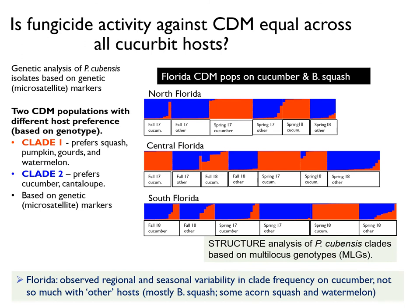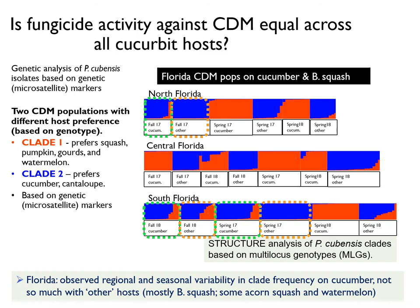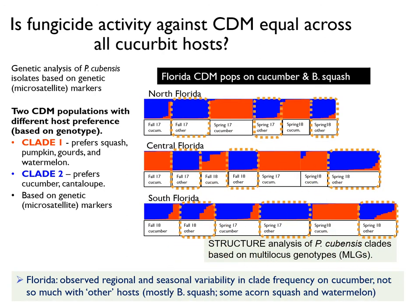We recently performed a similar study in Florida using the same genetic markers to examine isolates from cucumber and other hosts, mostly butternut squash and watermelon. We collected isolates from north, central, and south Florida across spring and fall production seasons in 2017 and 2018. Similar to North Carolina results, we noticed that the proportion of clades differed between cucumber and other hosts. However, these results varied from season to season and between years. We also noticed that cucumber P. cubensis populations could vary dramatically between seasons and among regions, while populations on other hosts, mostly butternut squash, were more stable.